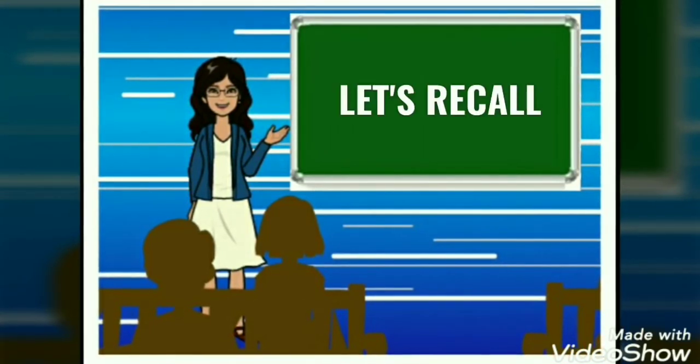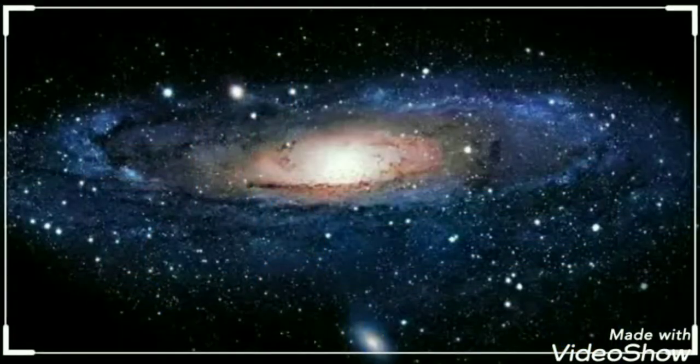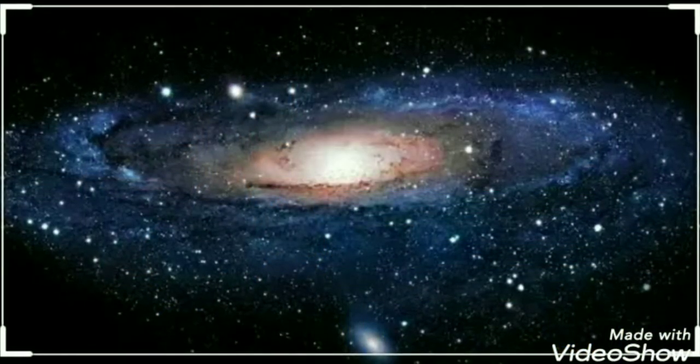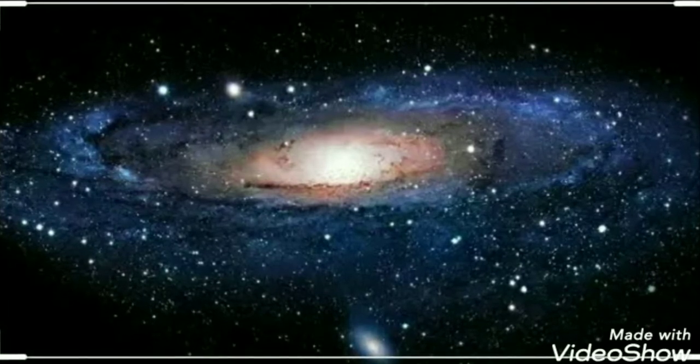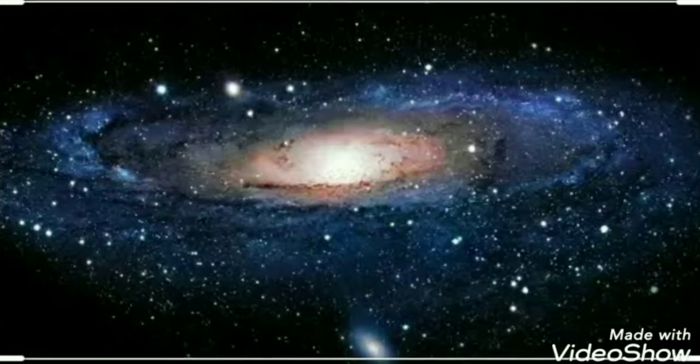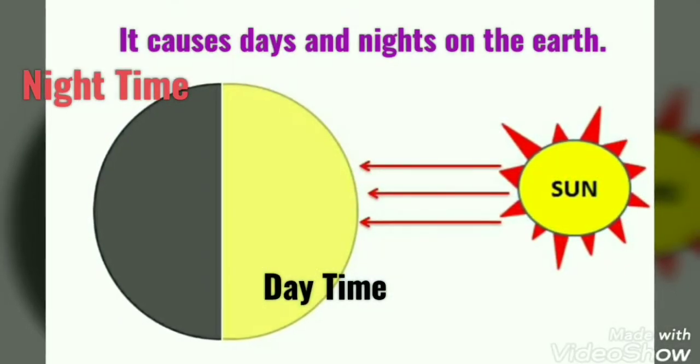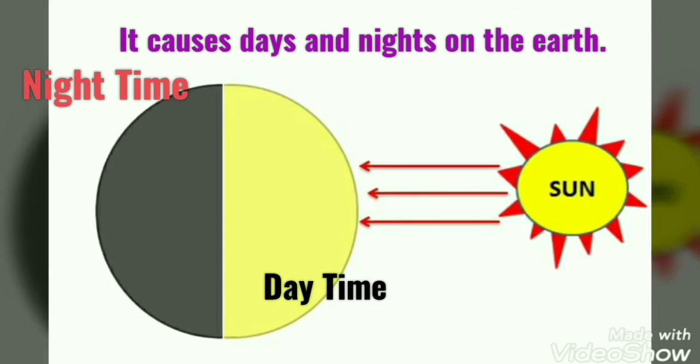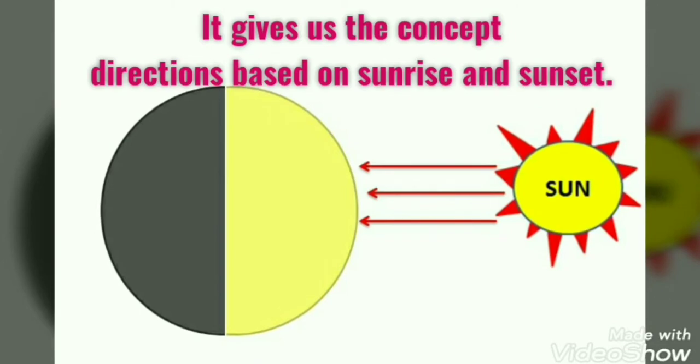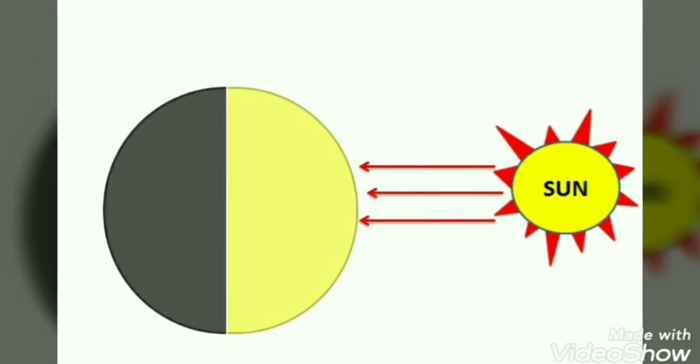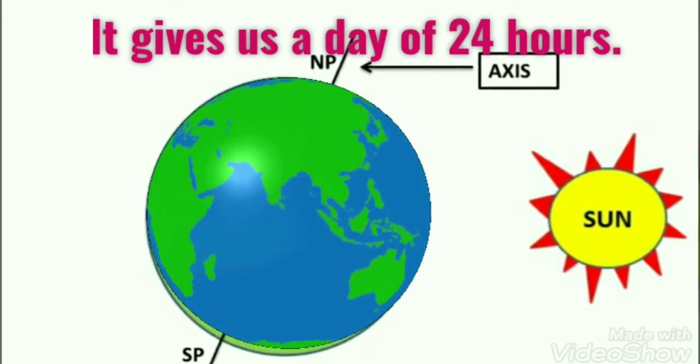Let's recall what all you learned about the rotation. First, it makes us feel that the sun, the moon and the other heavenly bodies move from east to west. Second, it causes days and nights on the earth. Third, it gives us the concept of direction based on sunrise and sunset. And the last but not the least, it gives us a day of 24 hours.